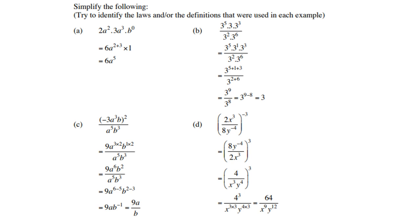Part d: to make the negative 3 exponent a positive 3, interchange the numerator and denominator. Take note — when you interchange, do not change the signs. Now 2 goes into 8 four times. Then y to the power negative 4 comes down to become y to the power positive 4. Finally, 4 to the power 3 is 64, x to the power 3 times 3 is x to the power 9, and y to the power 4 times 3 is y to the power 12.